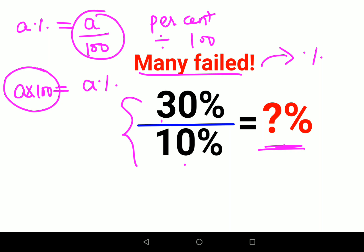Now let's look at our question. We have 30 percent, so this is 30 upon 100 divided by 10 upon 100. This basically looks like a upon b divided by c upon d, correct?